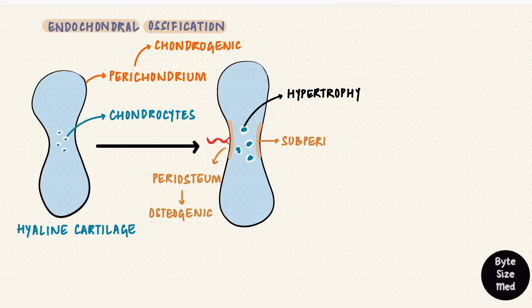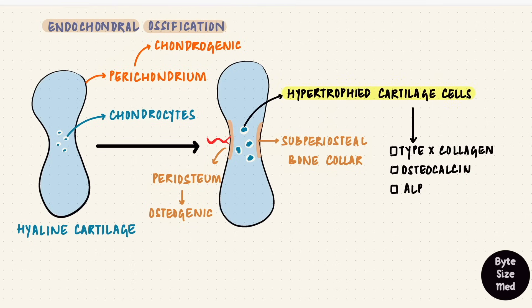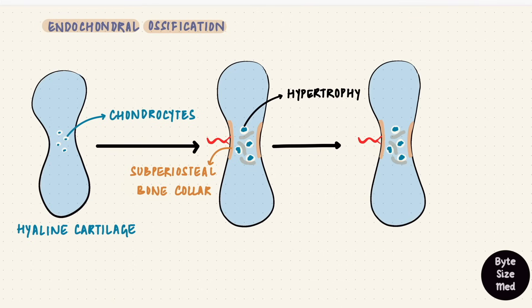This is a subperiosteal bony collar. The presence of bone doesn't allow the cartilage cells to get nourishment. The hypertrophied cartilage cells compress the surrounding cartilage matrix. They synthesize type 10 collagen, osteocalcin, alkaline phosphatase. These hypertrophied cells are thus needed for calcification. The calcification of the cartilage matrix reduces nutrition to those cells as well, so they die. That creates spaces in the matrix lined with calcification.